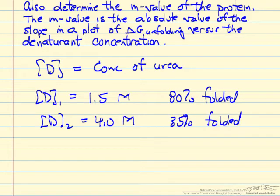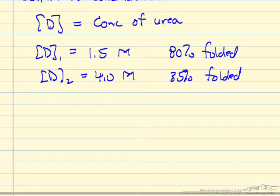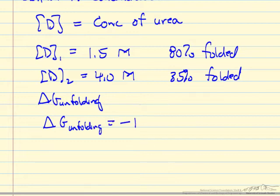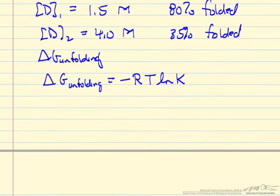So what we're going to do in this calculation is determine delta G of unfolding at these two conditions, and then we'll assume this linear dependence to estimate delta G when there's no urea present. To calculate delta G we're going to take advantage of thermodynamics, that delta G of unfolding is related to the gas constant, absolute temperature, and the log of the equilibrium constant.